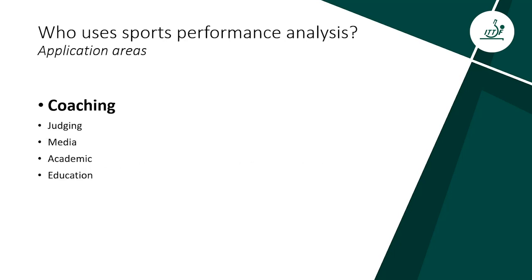Who uses sports performance analysis, and what are the application areas? Of course, the main part is coaching. There is a typical cycle: you have competition or training, you reflect on it, you make new decisions, and then you prepare for further competitions. It's always about decisions to be made for the future — how to play, how to practice. The primary use of performance analysis in coaching is to provide feedback to players and coaches, helping to direct training activity and enhance future performance. But besides coaching, there are many more application areas where performance analysis can be used.